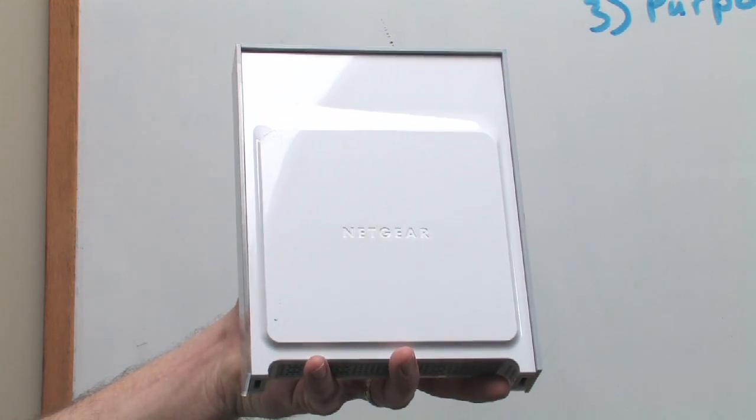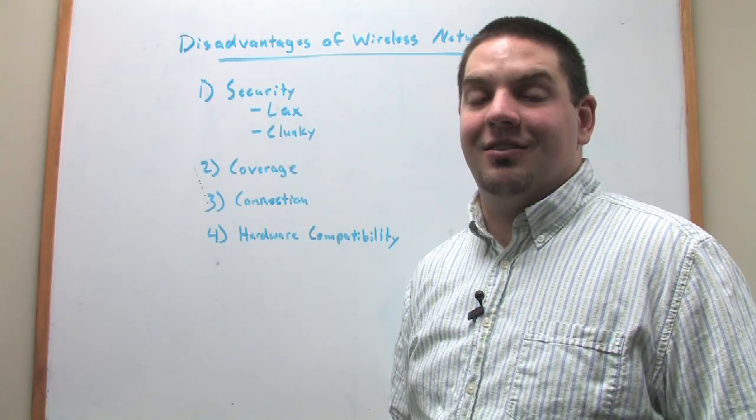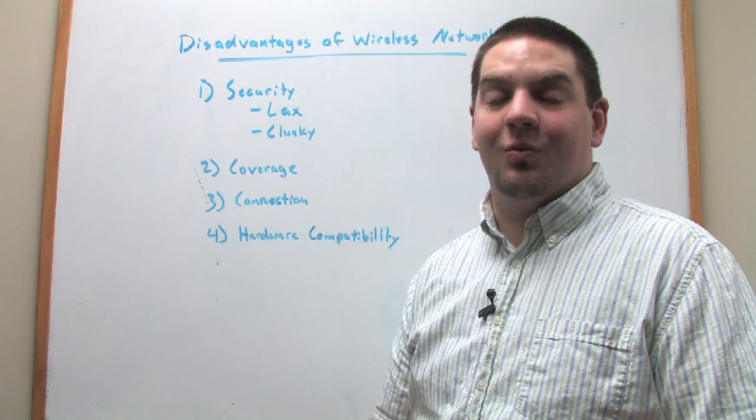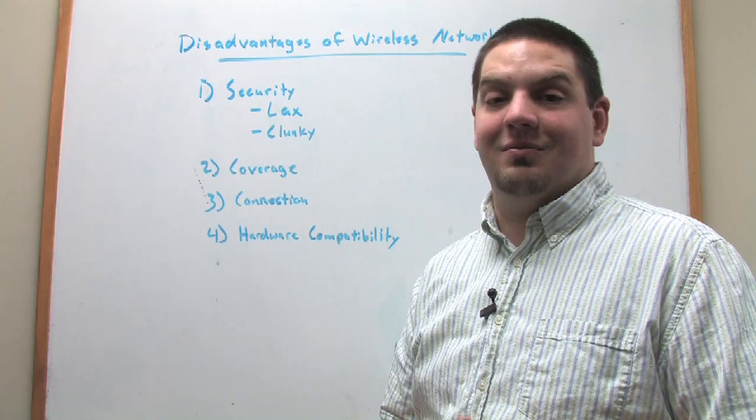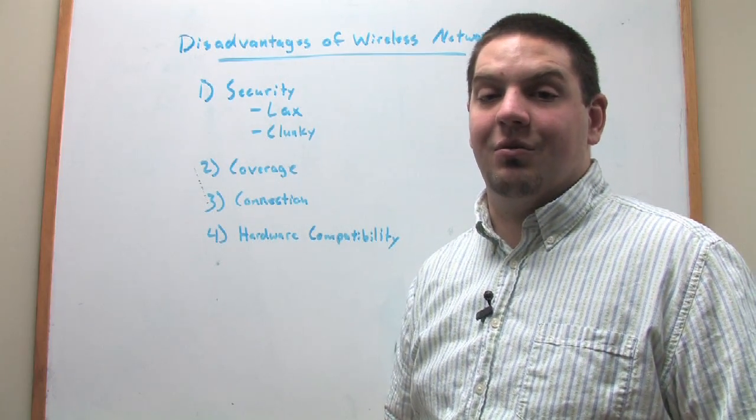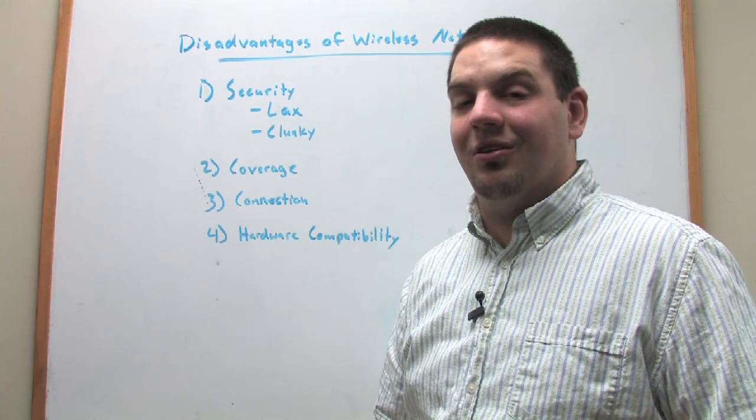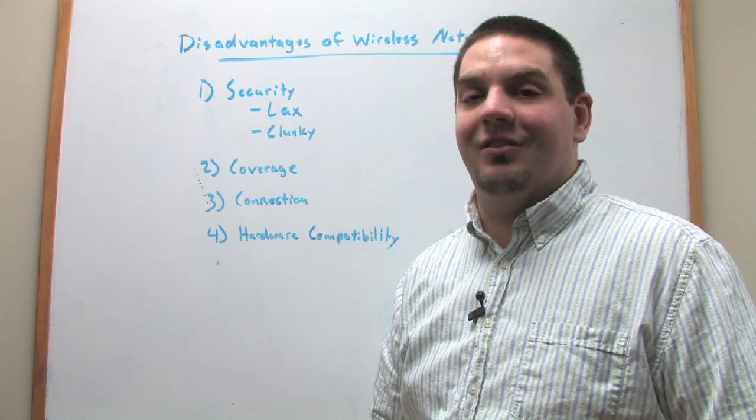Really simply, the first disadvantage of wireless networking is security. There are essentially two ways you go with security: either the security is too lax, meaning pretty much anybody can get in and do whatever they want to do, or it's so secure that it makes connecting very clunky or disjointed.